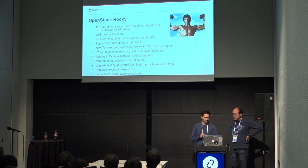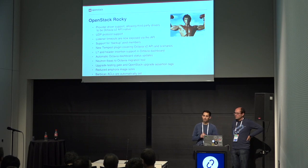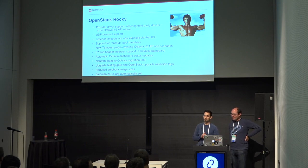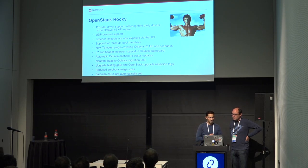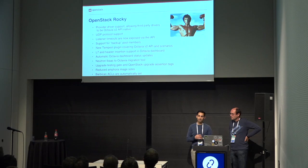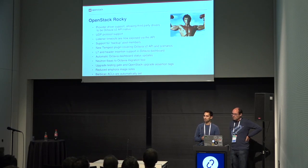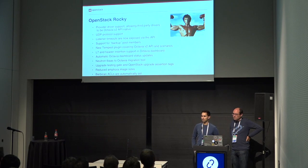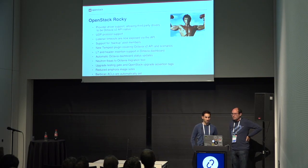We also have UDP support. Before we only supported TCP — now we do TCP and UDP, enabling use cases like IoT, since many IoT applications run on UDP. Another feature is that listener timeouts are now exposed via the API. Before, there was a default that only admins could change in the Octavia config file. Now users can define these timeouts when they create listeners — TCP timeouts, member connection timeouts — about four or five timeouts you can specify in the API.